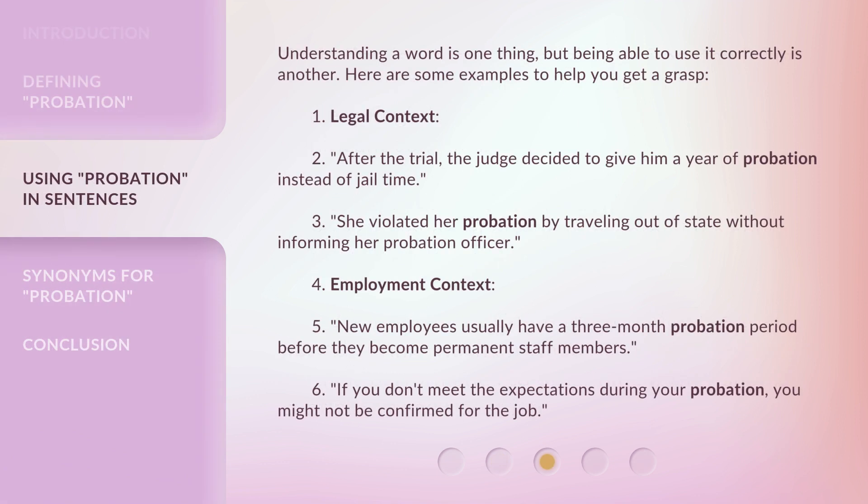Understanding a word is one thing, but being able to use it correctly is another. Here are some examples to help you get a grasp. Legal context: After the trial, the judge decided to give him a year of probation instead of jail time. She violated her probation by traveling out of state without informing her probation officer. Employment context: New employees usually have a three-month probation period before they become permanent staff members. If you don't meet the expectations during your probation, you might not be confirmed for the job.